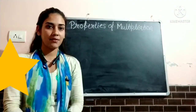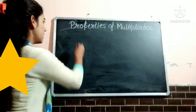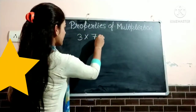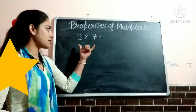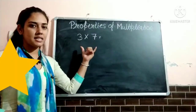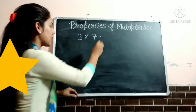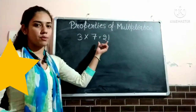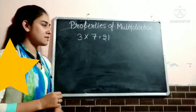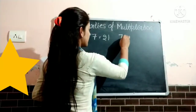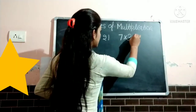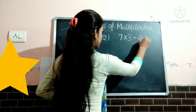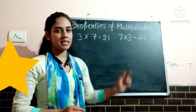First of all, let us take one example. 3 multiply 7 — if we will multiply 3 and 7, then the product is 21. And if we will multiply 7 multiply 3, then 7 threes are 21. It means the product remains same.